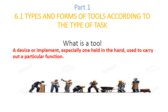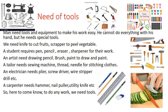Basically, what is a tool? It is a device or an implement, or you can say an equipment, especially one held in the hand, used to carry out a particular function. You can see in the picture: the carpenter is using a saw, a painter is using a brush, a sweeper is using a broom, and a gardener is using a cutter and so on.